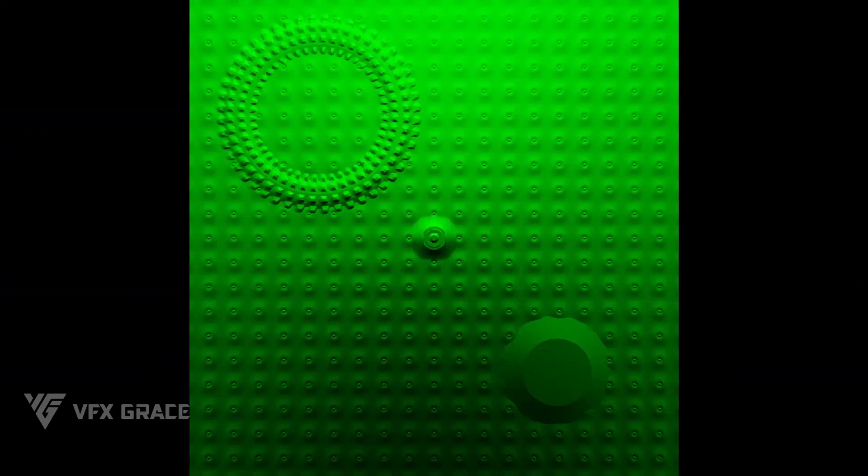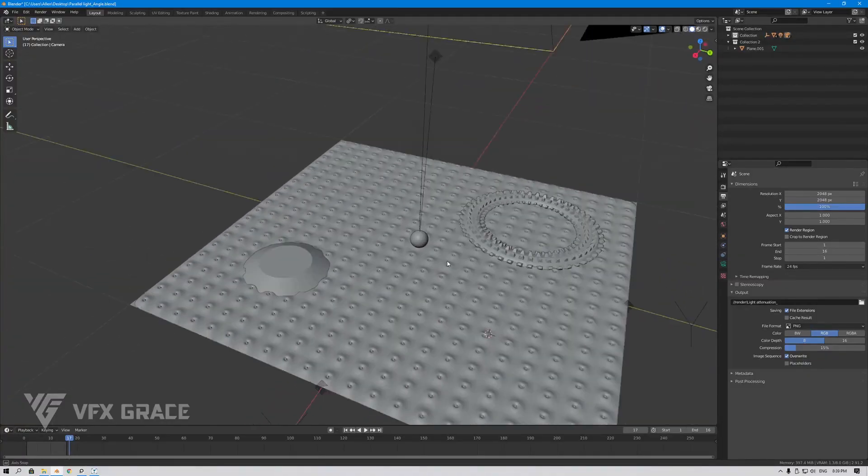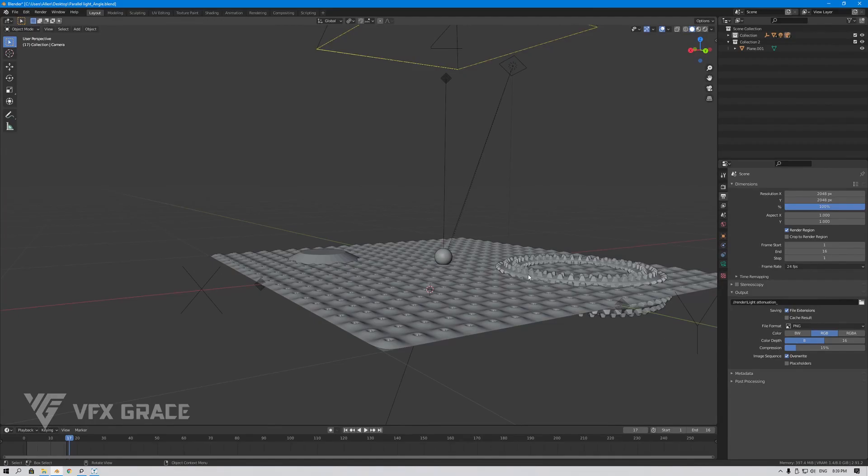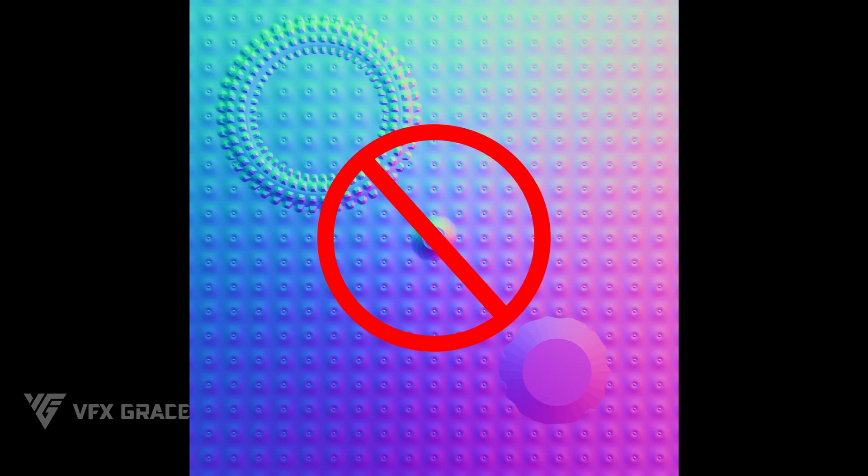As we all know, RGB components correspond to the x, y and z coordinates respectively of the surface normal. So such a normal map indicates a curved object instead of a horizontal one. However, as you see, the module we created is horizontal. Clearly, there is something wrong with the normals. And this problem is caused by the uneven lighting.